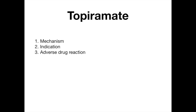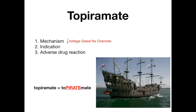We're going to finish up with topiramate. Topiramate's mechanism is that it inhibits voltage-gated sodium channels, just like a lot of the other drugs we've talked about today. To remember this, think of a 'topi-rate mate' — a pirate ship. A pirate ship sails on salt water, and salt reminds you of voltage-gated sodium (salt) channels. That is all the anti-epileptic drugs — all of their mechanisms with mnemonics, all of the high-yield indications and adverse drug reactions.